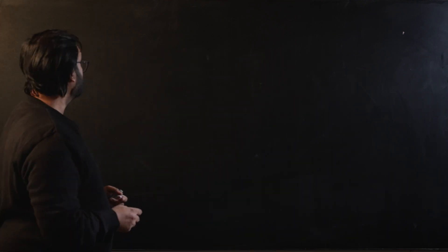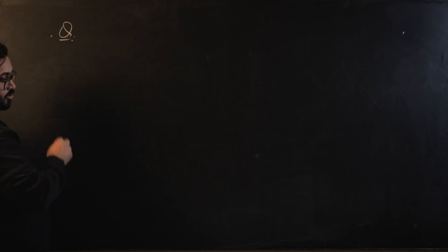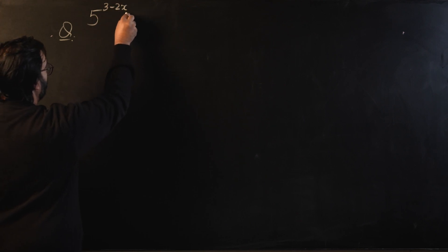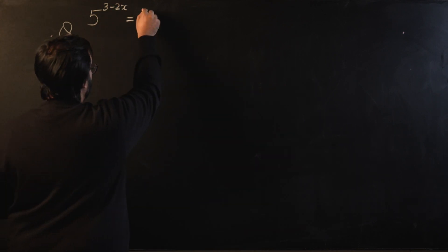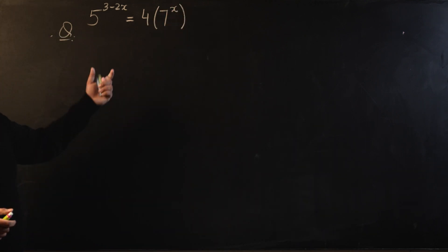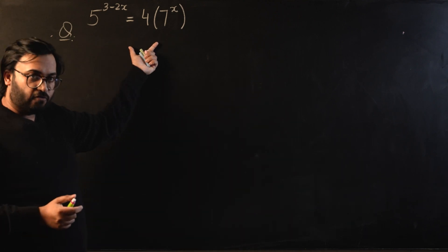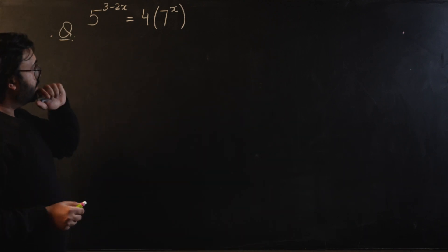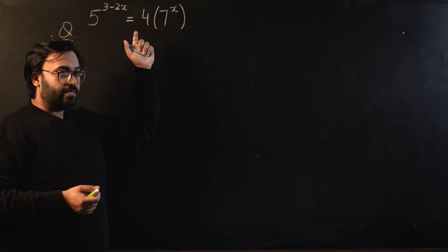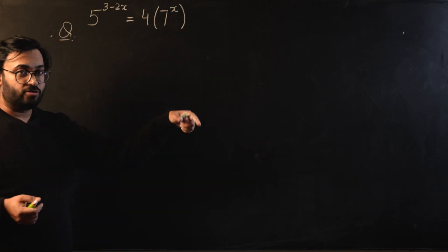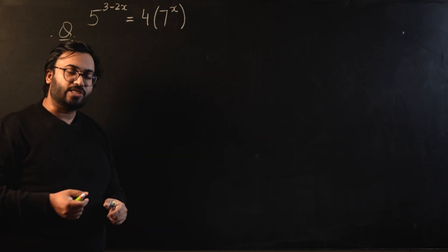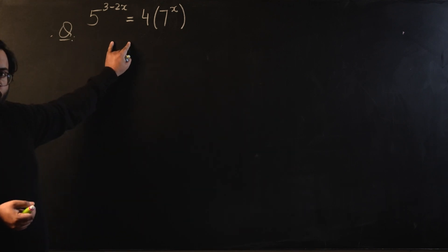Today's question is from A-levels Paper 3, logarithms, and this is a question that has been frequently seen in past papers — most recently in June 2019. The question is: five raised to the power of three minus two x is equal to four times seven raised to the power x. There are mainly two approaches: one where we immediately use indices and then move into logarithms, and a second where we start with logarithms from the beginning.